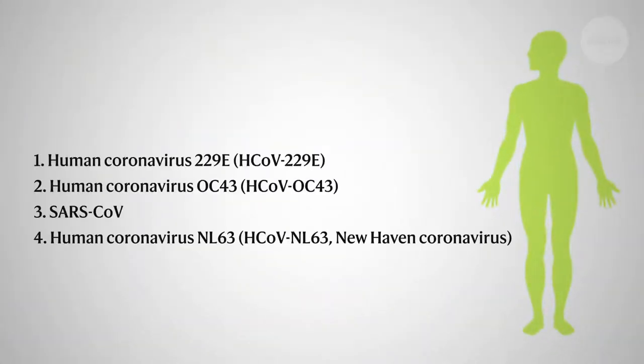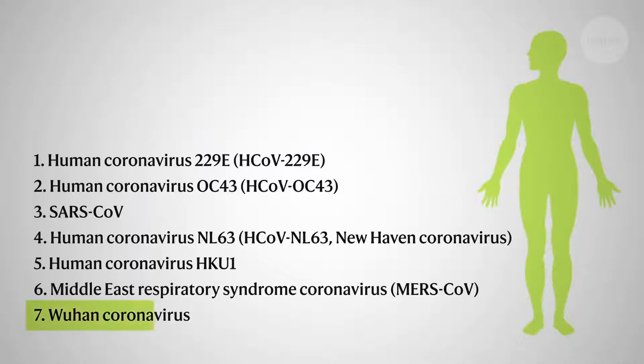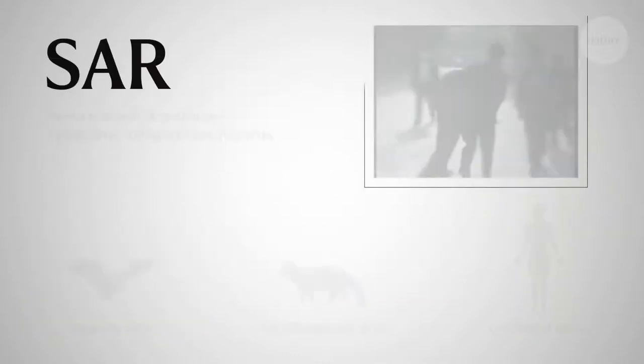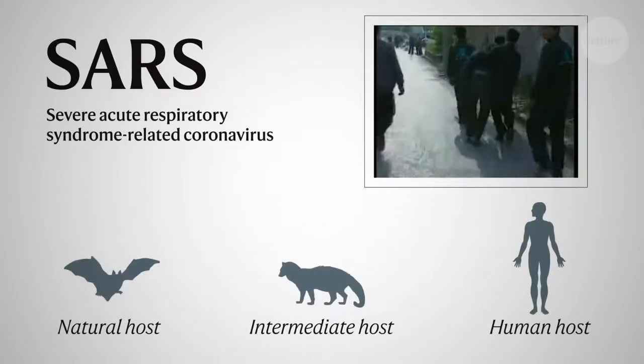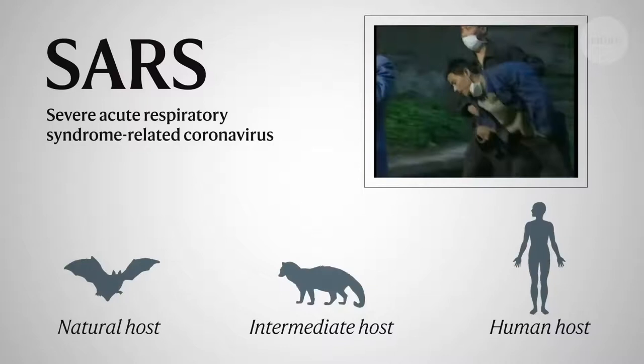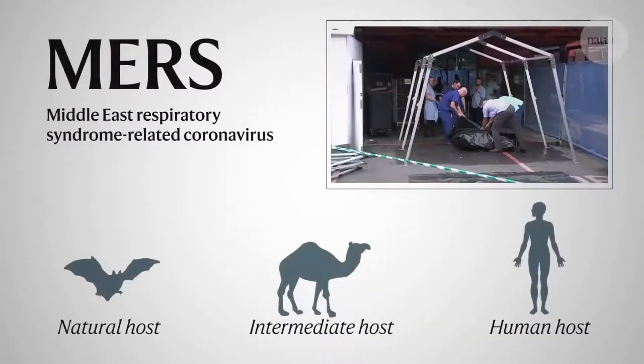This new virus is the seventh known human coronavirus and it affects the respiratory system. Some coronaviruses have mild symptoms, however others are much more dangerous. SARS and MERS are both coronaviruses.